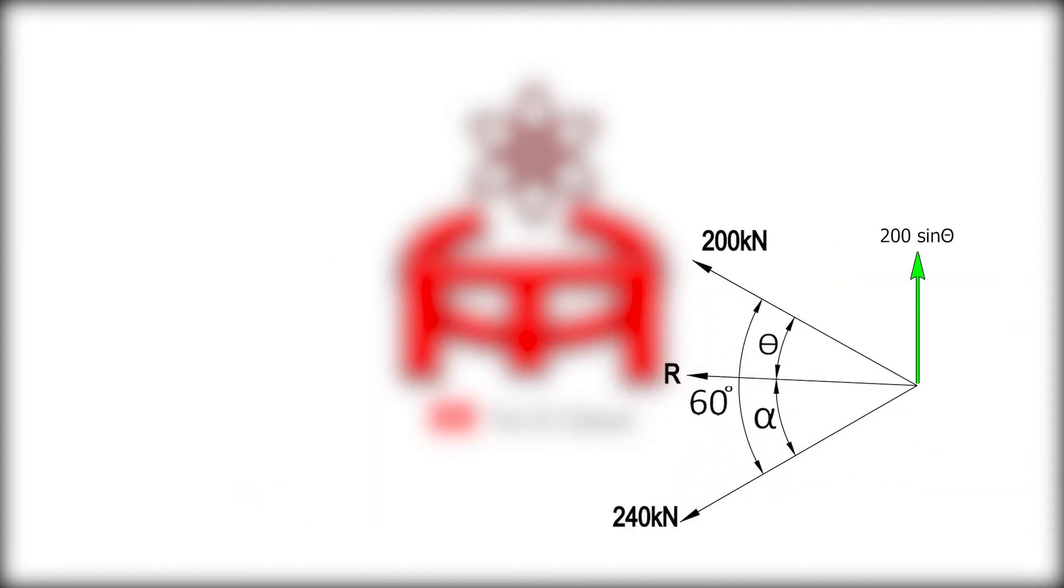200 sine theta is equal to 240 sine alpha, or we can rewrite as 200 sine theta minus 240 sine alpha equals zero. Let summation of forces along y equal to zero so that the barge can sail along the river.